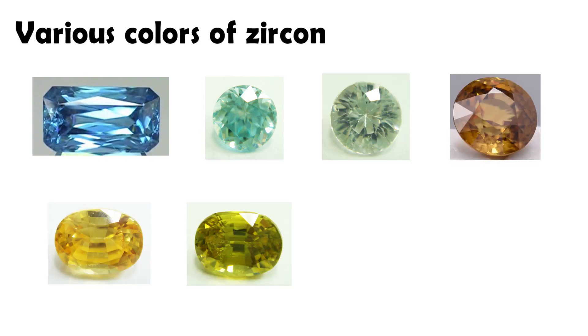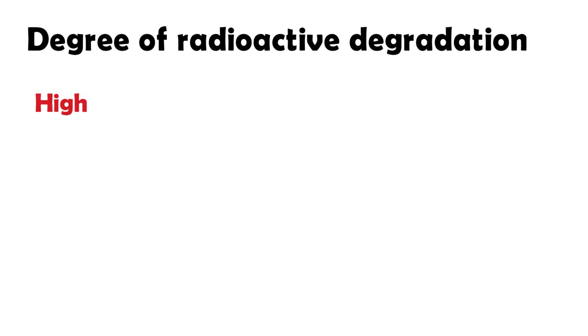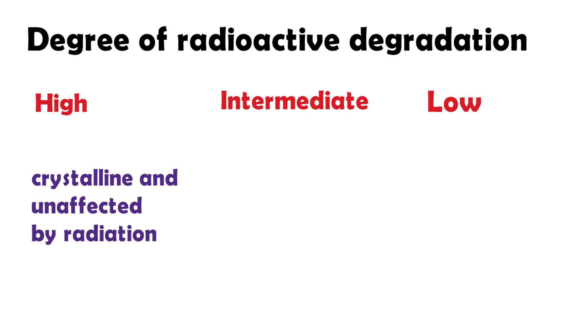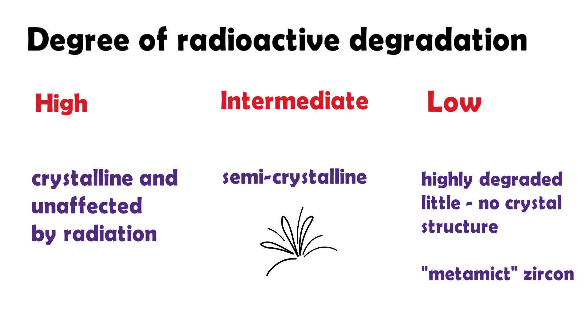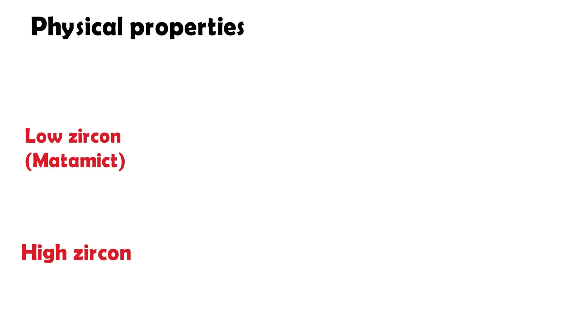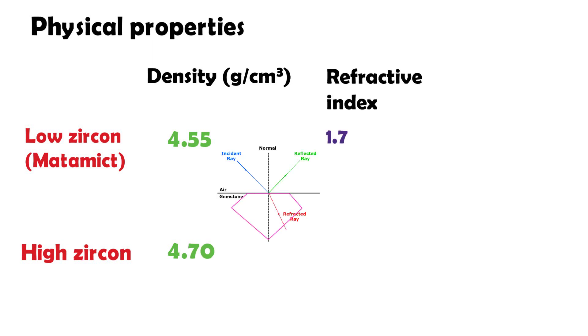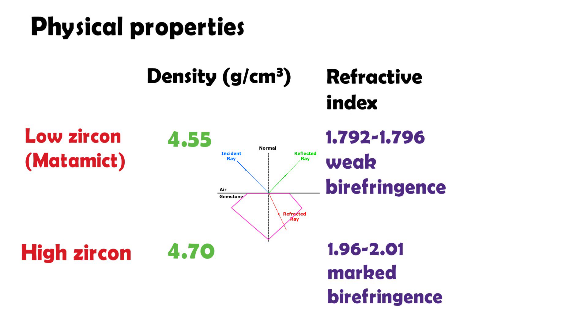Zircon has various colors due to metamictization, from blue to yellow. According to the degree of radioactive degradation, Zircon can be classified in three types: High, Intermediate, and Low. High Zircon has a full crystal structure with little or no damage from radioactive elements. Low Zircon has been changed by thousands of years of irradiation from its own trace elements, resulting in extensive crystal structure damage. Intermediate Zircon is between high and low. Therefore, metamict Zircon has lower density, refractive index, and hardness than high Zircon, because low Zircon became amorphous from the radioactive elements.